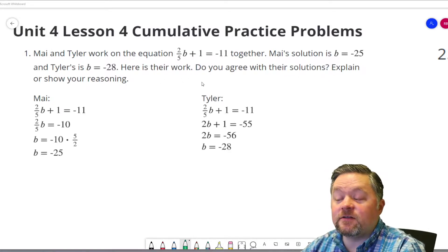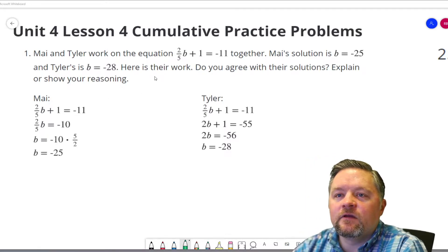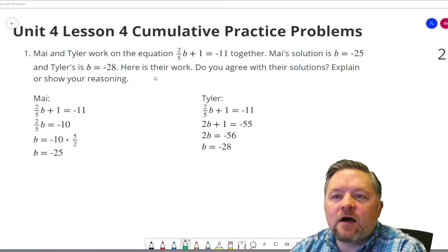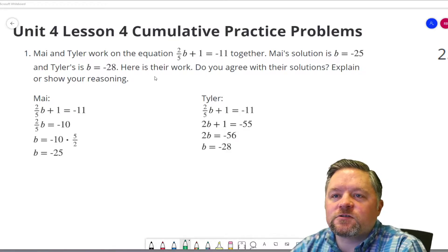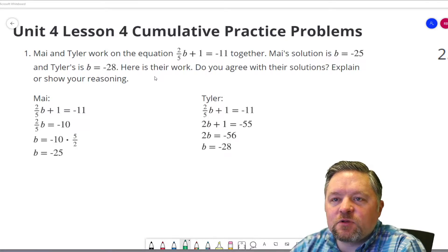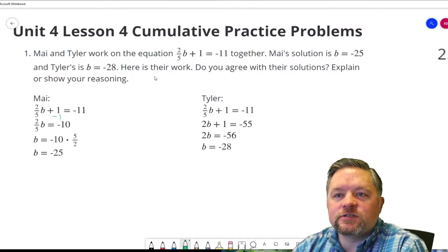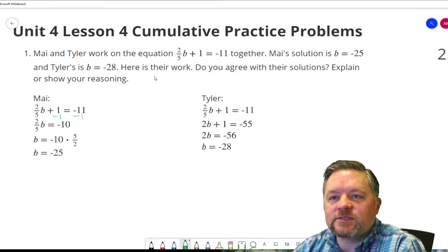Well, I definitely don't agree with both of their solutions. Okay, what did Mai do first? It looks like Mai started out by getting rid of this plus 1, which means subtracting 1. If we subtract 1 from that side, we have to subtract 1 from this side.